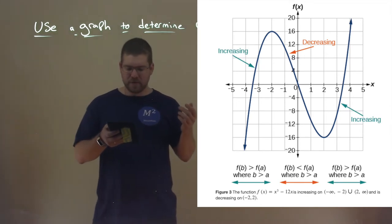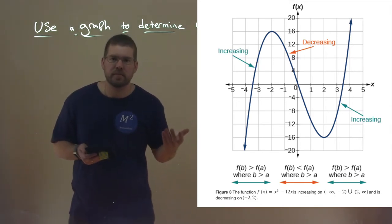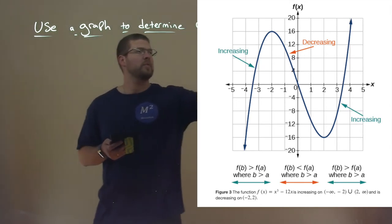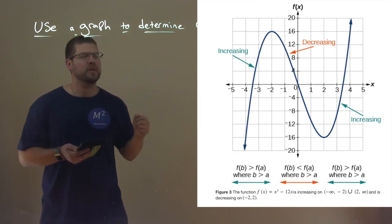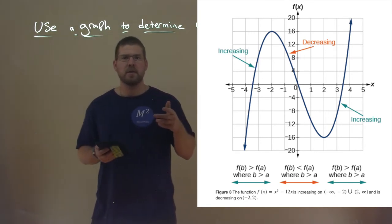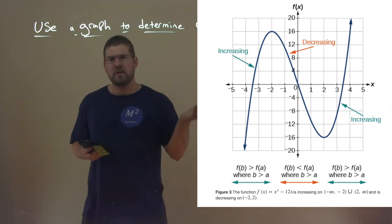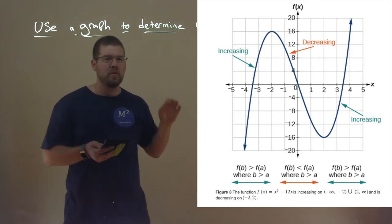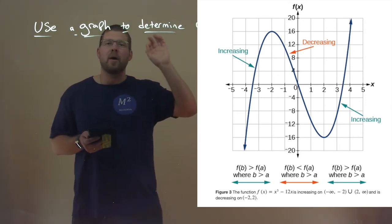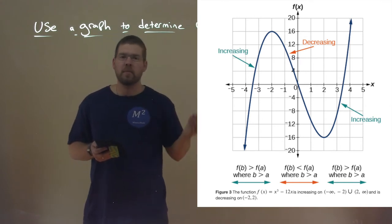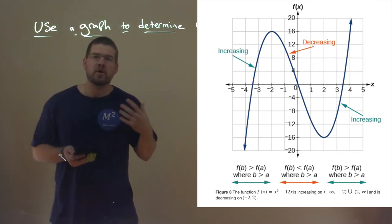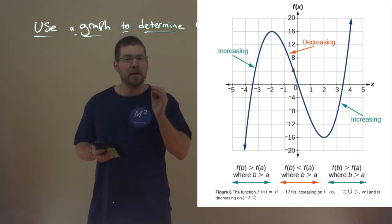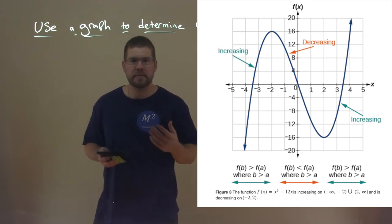But what really happens at the peaks? So we said we're going to go over when a function's increasing, decreasing, or constant. Well, if a function's not increasing nor decreasing, right there at that one spot, right at the top or the bottom, is what we call a constant. It's neither increasing nor decreasing.